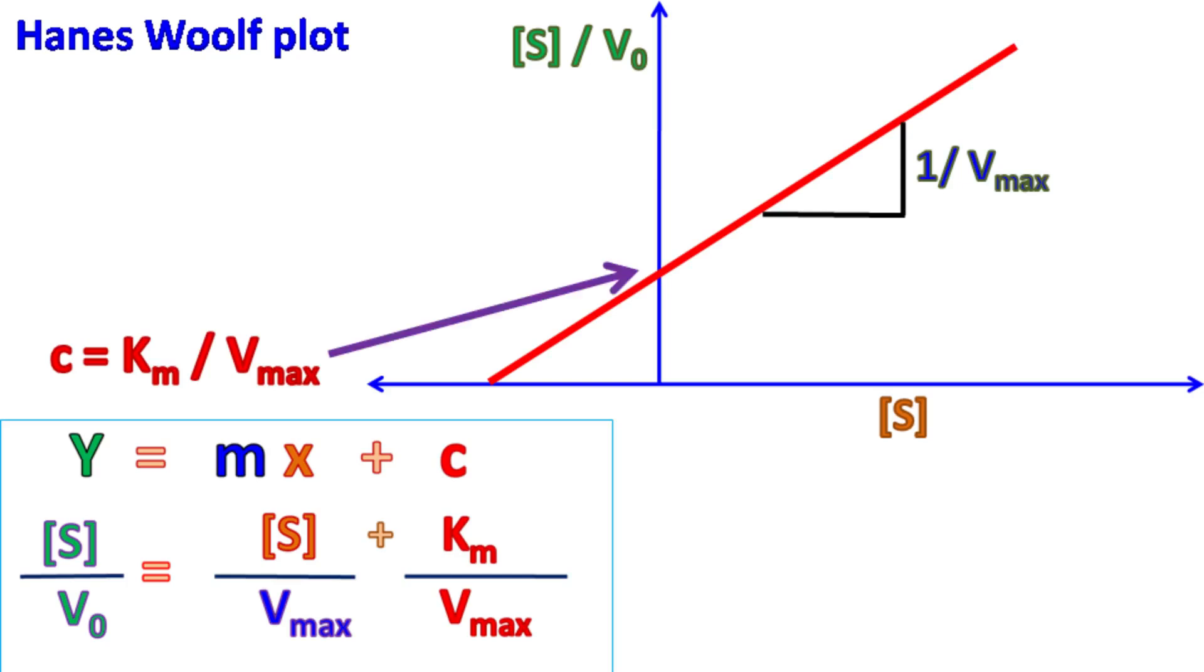The intercept C, which is the intercept of Y axis, will be equal to Km by Vmax, and the intercept on X axis will be equal to minus Km.